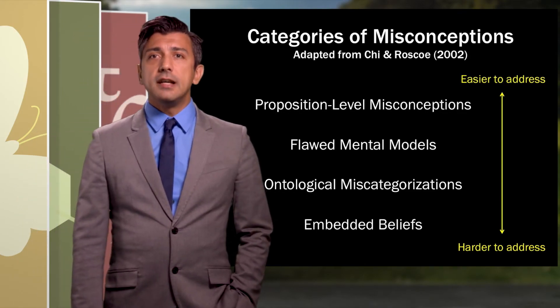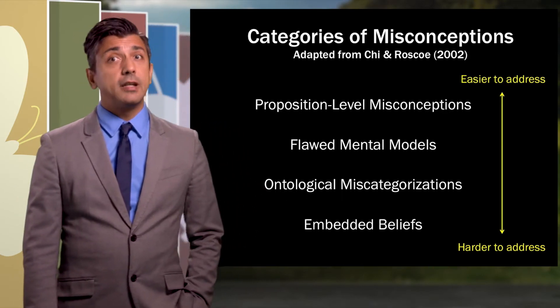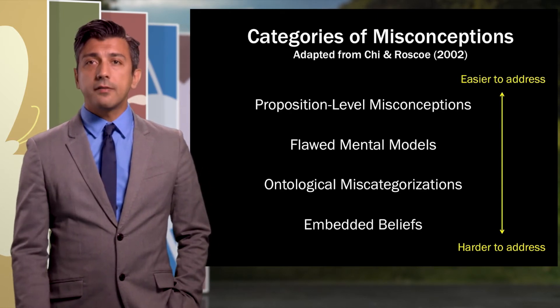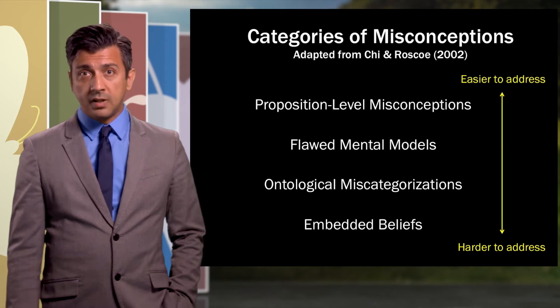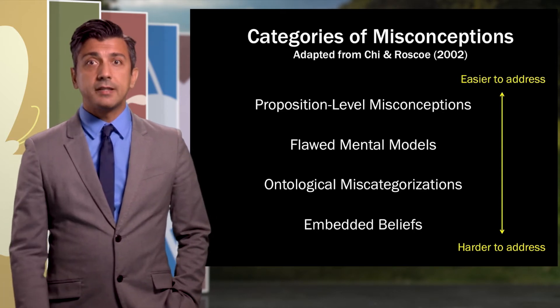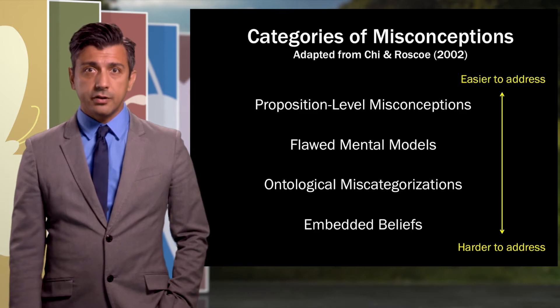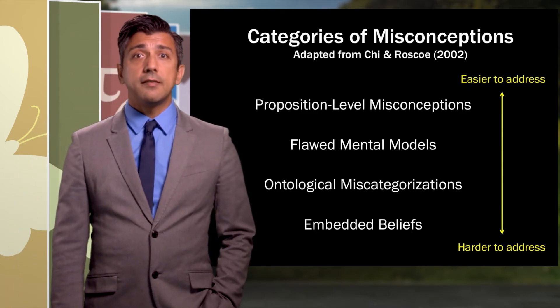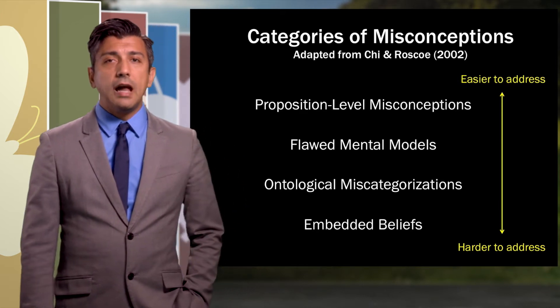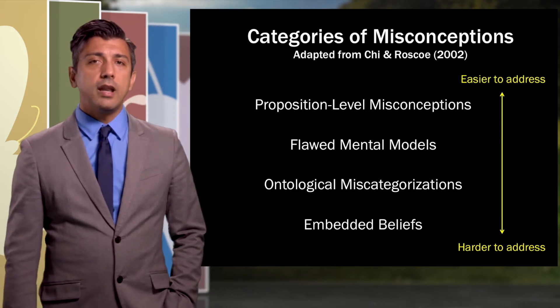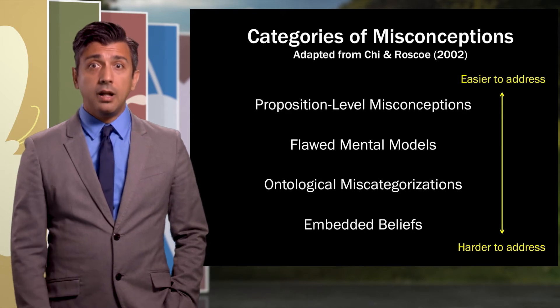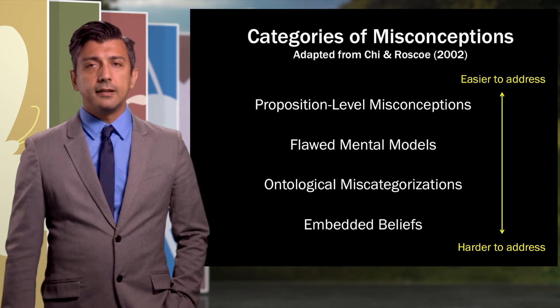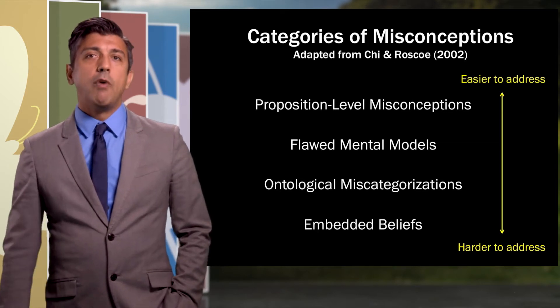So there is a catalog of misconceptions, but they're not all the same. They vary in terms of how easy they are to address, to dispel. And so this is somewhat of a taxonomy adopted from some researchers. So we see that misconceptions can be very easy to address when they are at the single proposition level. And they become progressively harder when they affect our whole mental model and beliefs that we have about how the world works.